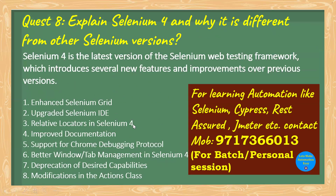Explain Selenium 4 and why it is different from previous versions. Selenium 4 is the latest version and provides a lot of new features: an upgraded Selenium Grid, relative locators, improved documentation, improved support, support for Chrome DevTools Protocol (CDP), better window and tab management, deprecation of DesiredCapabilities, and modifications in the Actions class.